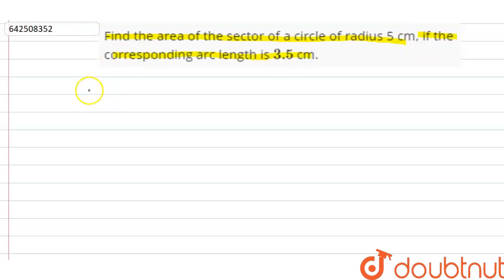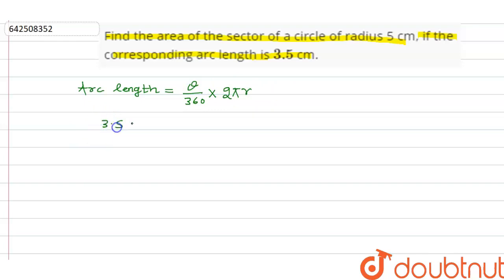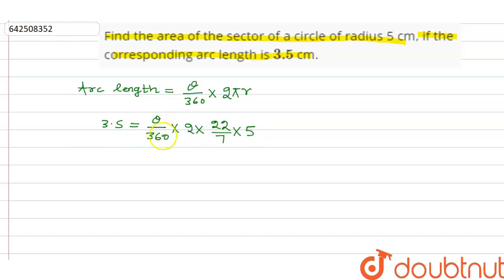We know the arc length formula: arc length equals theta divided by 360, into 2 pi r. We are given that arc length is 3.5, so 3.5 equals theta upon 360. We are also given r equals 5. So: 3.5 = (theta / 360) × (22/7) × 5.